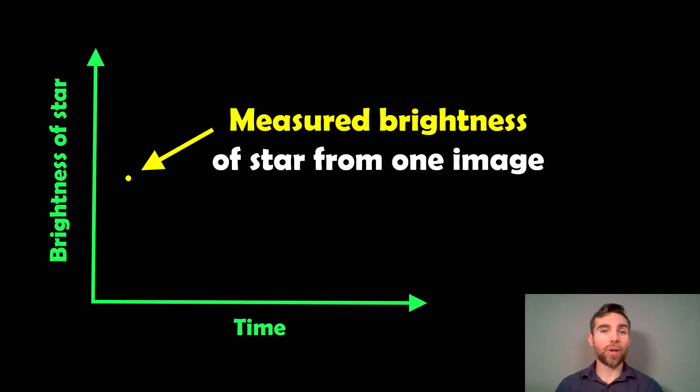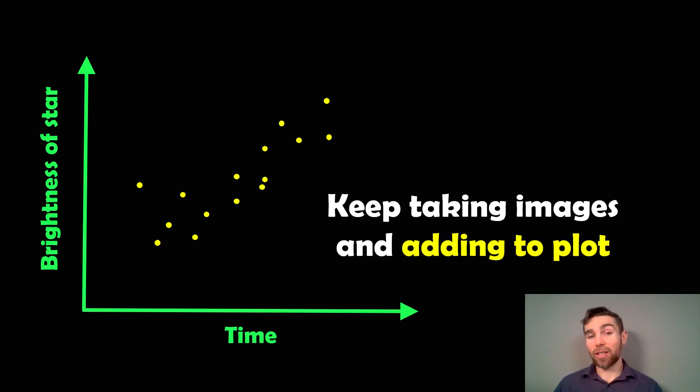If you then calculate the brightness of this star, you can start to create a plot. You've got a single data point from one picture. You put it on a plot of time against the brightness of the star, or the magnitude or flux, which is basically the energy being emitted by the star. So you've got a single data point there, and then you just keep doing that.